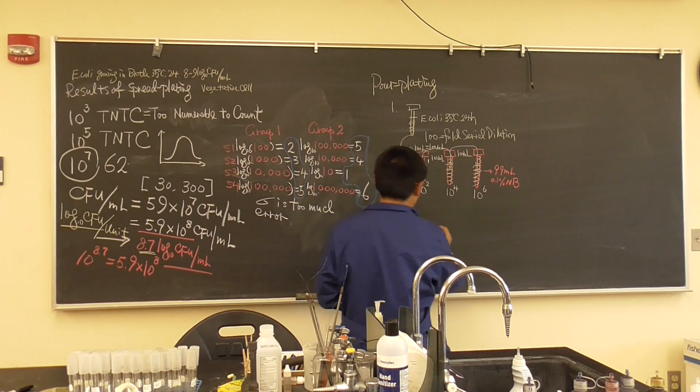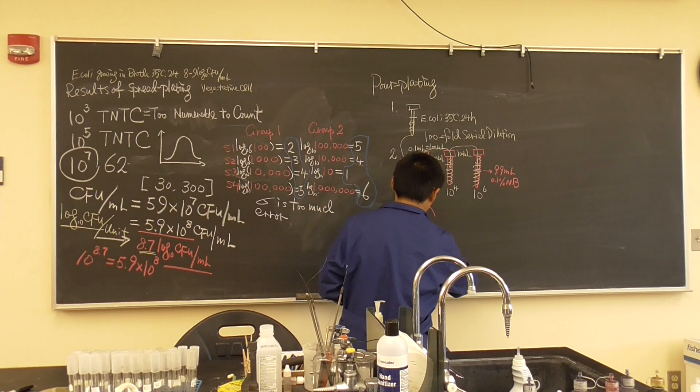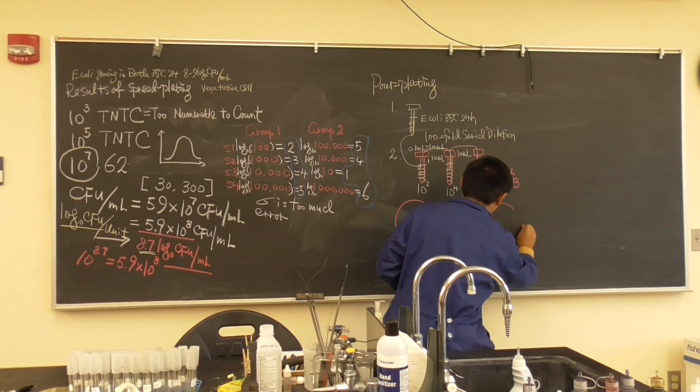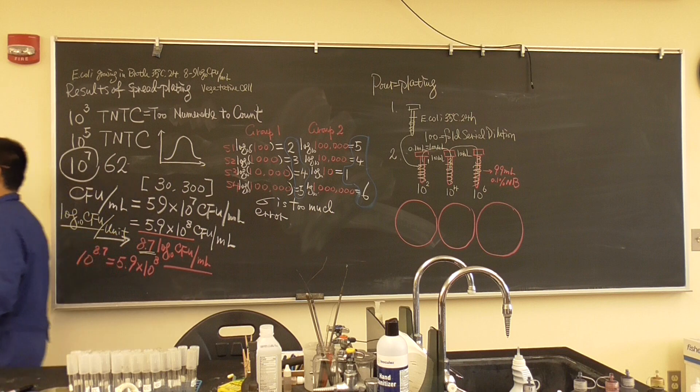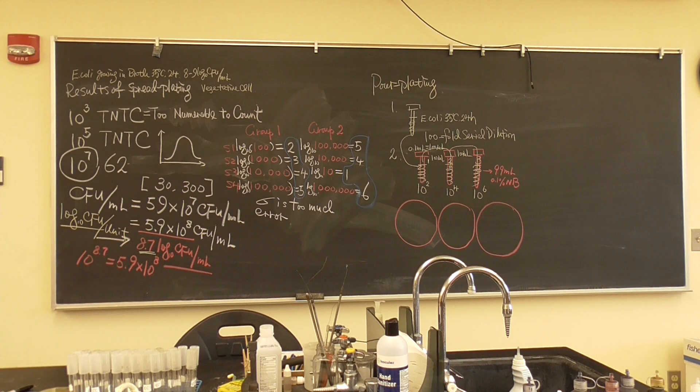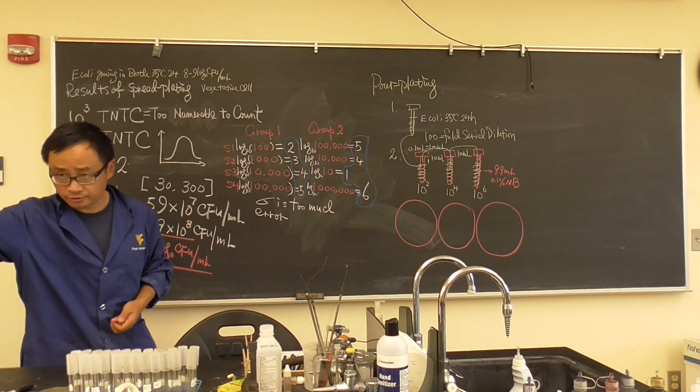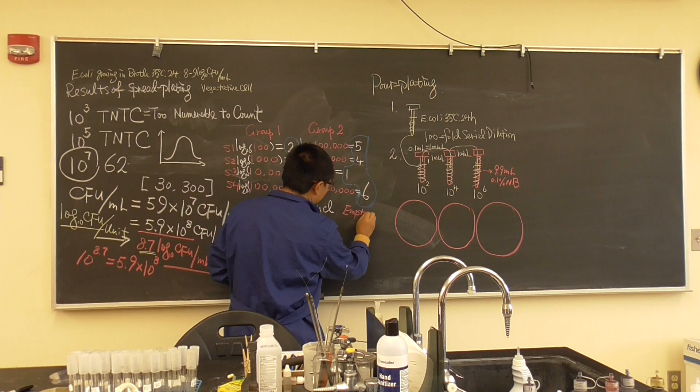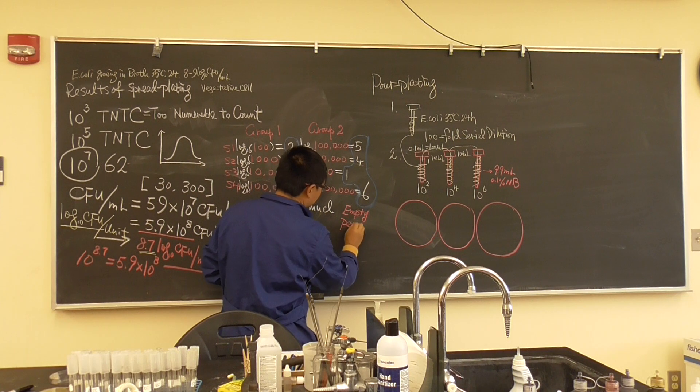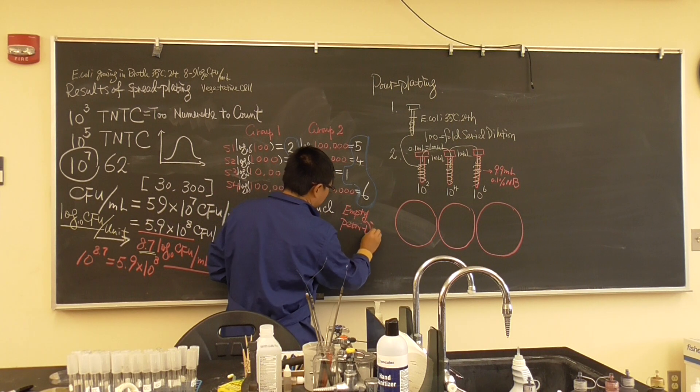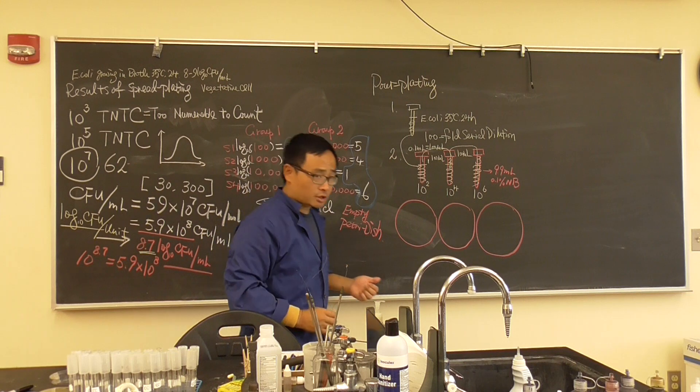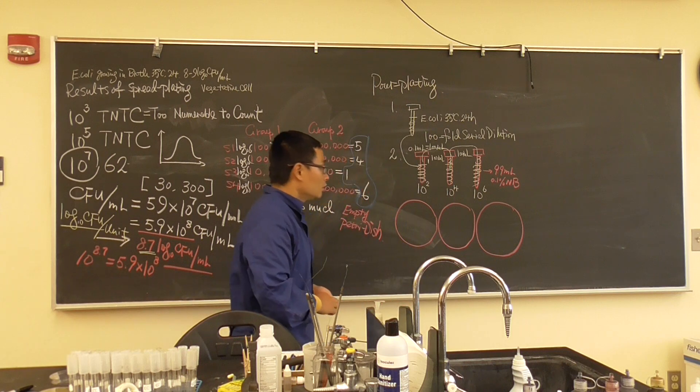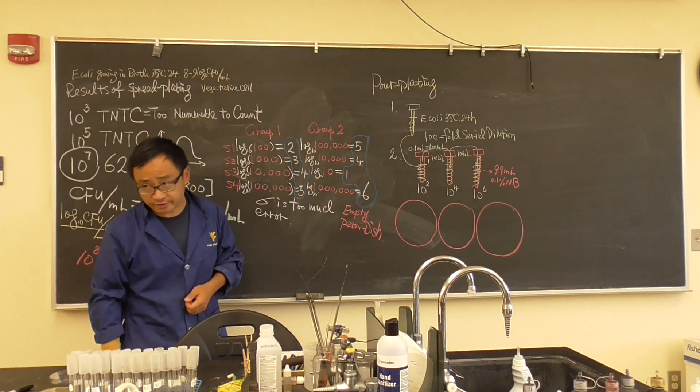Now it's something different. Instead of you get agar plates, what you're going to get today is empty petri dish. This is empty petri dish. These three are empty petri dishes. Because we're going to add the bacteria culture there, we're going to add a melted agar. Of course, the first thing, don't forget, is labeling.